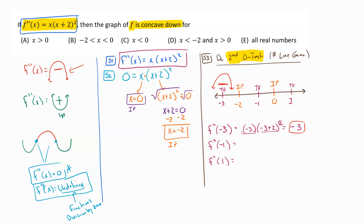Then we do the same thing with negative one. Plugging in negative one: we get negative one times (negative one plus two) squared, which is negative one times one squared, giving negative one. We don't care about the number — just that it's negative. So this region is also concave down like a frown.